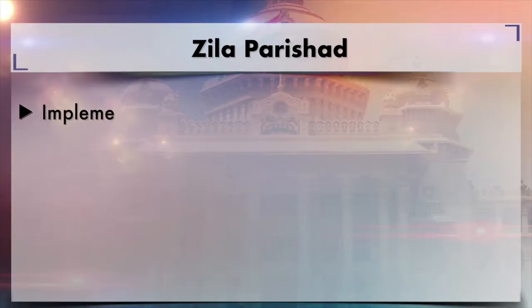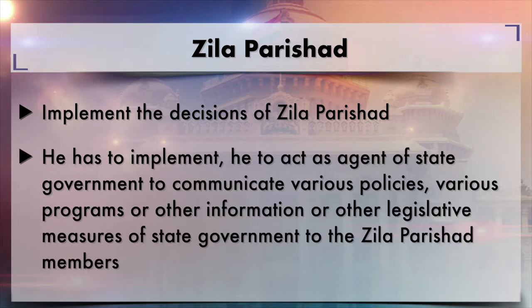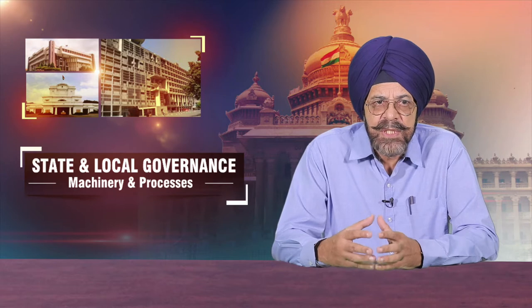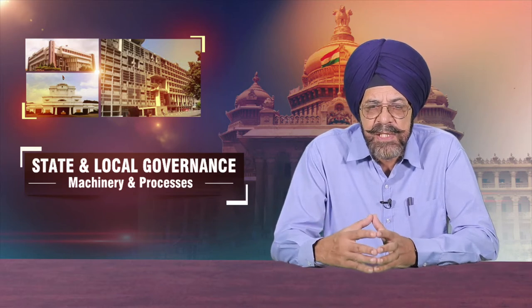Since it is a district level body, the executive officer is given the designation of chief executive officer. He is to implement the decisions of Zilla Parishat and also act as an agent of the state government to communicate various policies, programs, and legislative measures to the Zilla Parishat members. He is also responsible for financial affairs, preparation of budget, maintenance of accounts, maintenance of records, implementation of Zilla Parishat works, and procuring any record or information required by the Zilla Parishat.